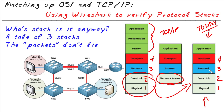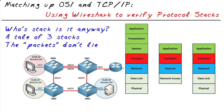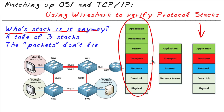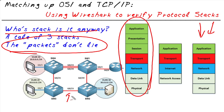So at the end of the day, we have our physical, data link, network, transport, and application layers. As data moves up and down a protocol stack, we refer to the data at the transport layer as segments, at layer three as packets, at layer two as frames, and at layer one as bits of data. So regarding the question of whose stack is it anyway — we are using the TCP/IP protocol suite today, although it borrows a lot of the numbers and naming from the OSI reference model. The packets are not going to lie, and the truth really is on the wire.